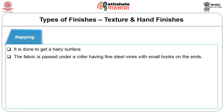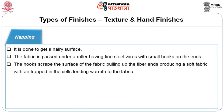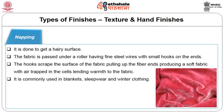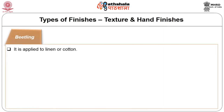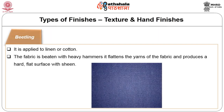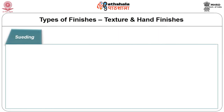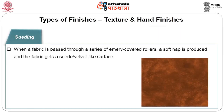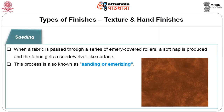Napping is done to get a hairy surface — the fabric is passed under a roller having fine steel wires with small hooks that scrape the surface, pulling up fiber ends and producing a soft fabric with air trapped in the cells, lending warmth. It is commonly used in blankets, sleepwear and winter clothing. Beetling is applied to linen or cotton — the fabric is beaten with heavy hammers, flattening yarns and producing a hard flat surface with sheen. Suiting (peach finish): fabric is passed through emery-covered rollers producing a soft nap and a suede velvet-like surface, also called sanding or emerizing.